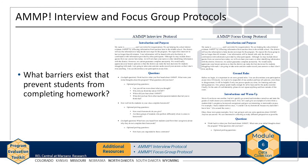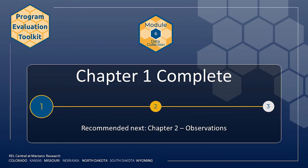Here are examples of an interview protocol and a focus group protocol for the AMP evaluation. These example protocols are aligned to the AMP evaluation question, what barriers exist that prevent students from completing homework? You can see subtle differences between an interview and focus group protocol. Remember that the AMP evaluation question aligns with the AMP logic model, found on the resources page of the website. This concludes the chapter on preparing for and conducting interviews and focus groups. Chapter 2 of this module covers considerations for conducting observations.